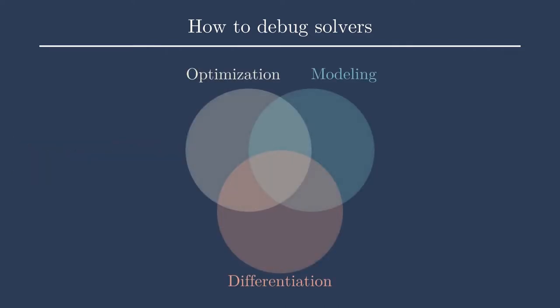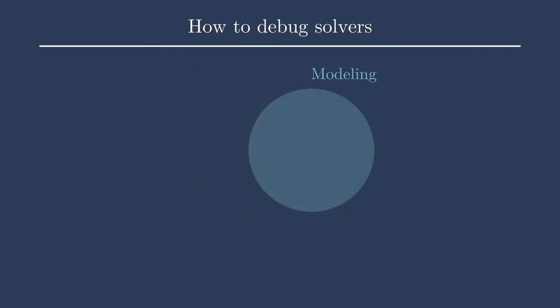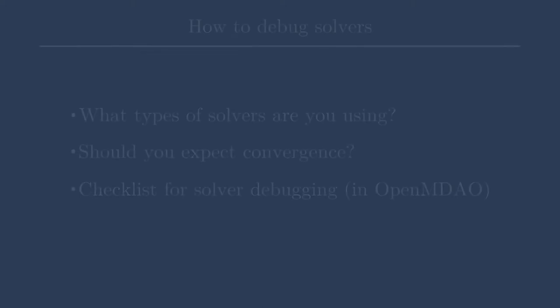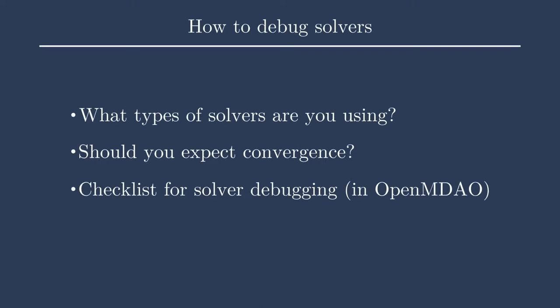This firmly falls within the modeling focus of our PracticalMDO course. The first two bullet points set the stage, and the third bullet point is the meat of this lecture. First, we'll talk about what types of solvers you're using and set expectations — should you expect convergence for this setup? And then lastly, I have a nine-step checklist for solver debugging, focused in OpenMDAO but applicable to any framework or system.